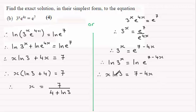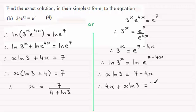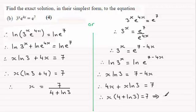You can see this is taking basically the same shape as what we had before. Adding 4x to both sides gives 4x plus x times the natural log of 3 equals 7. Pulling out x as a common factor: x bracket 4 plus natural log of 3 equals 7. Dividing both sides by 4 plus natural log of 3, you get x equals 7 divided by 4 plus the natural log of 3. So a couple of ways there that you could approach that question.